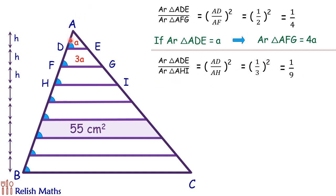Now the area we have assumed for ADE is a units. So for AHI it will be 9a units. Now let's see: if AHI is full 9a, out of which AFG is 4a, so this leftover portion will be nothing but 5a units.